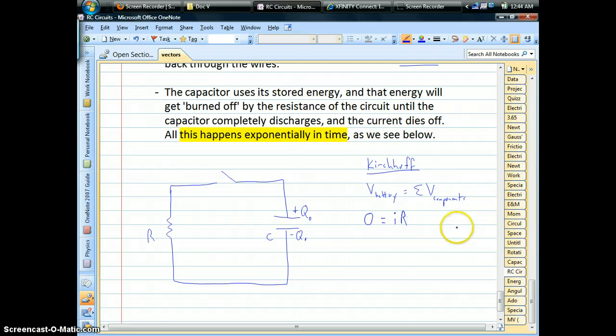From Ohm's law, we know how to find the voltage for a resistor, and then charge divided by capacitance is our voltage for the capacitor. So that's what our equation looks like for this circuit.